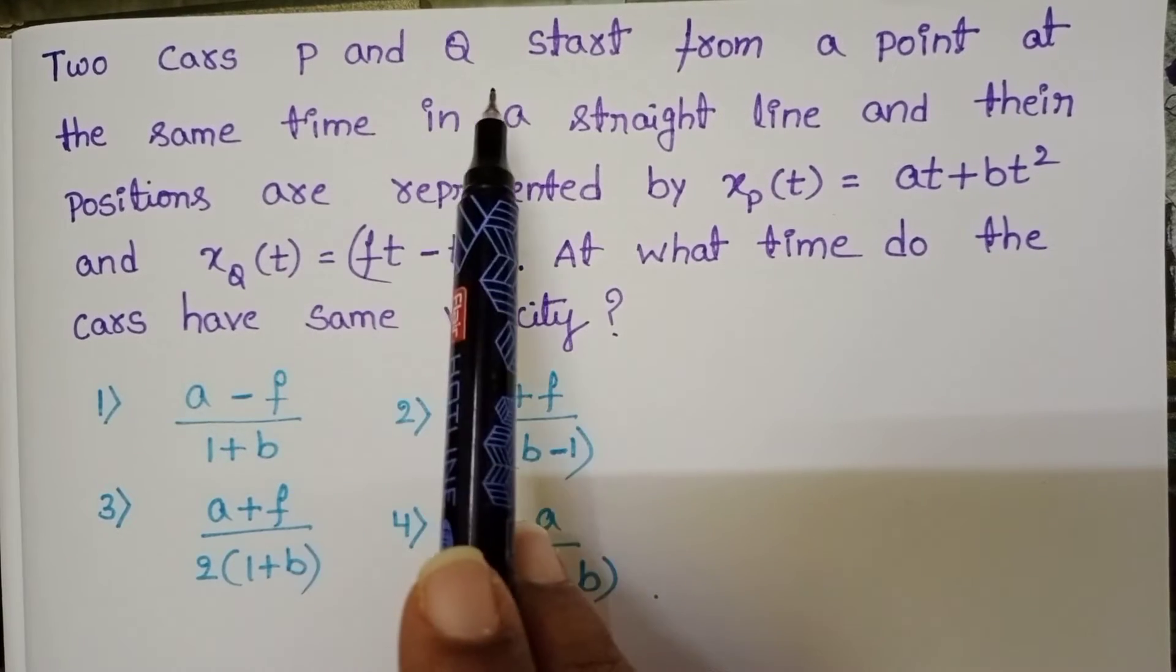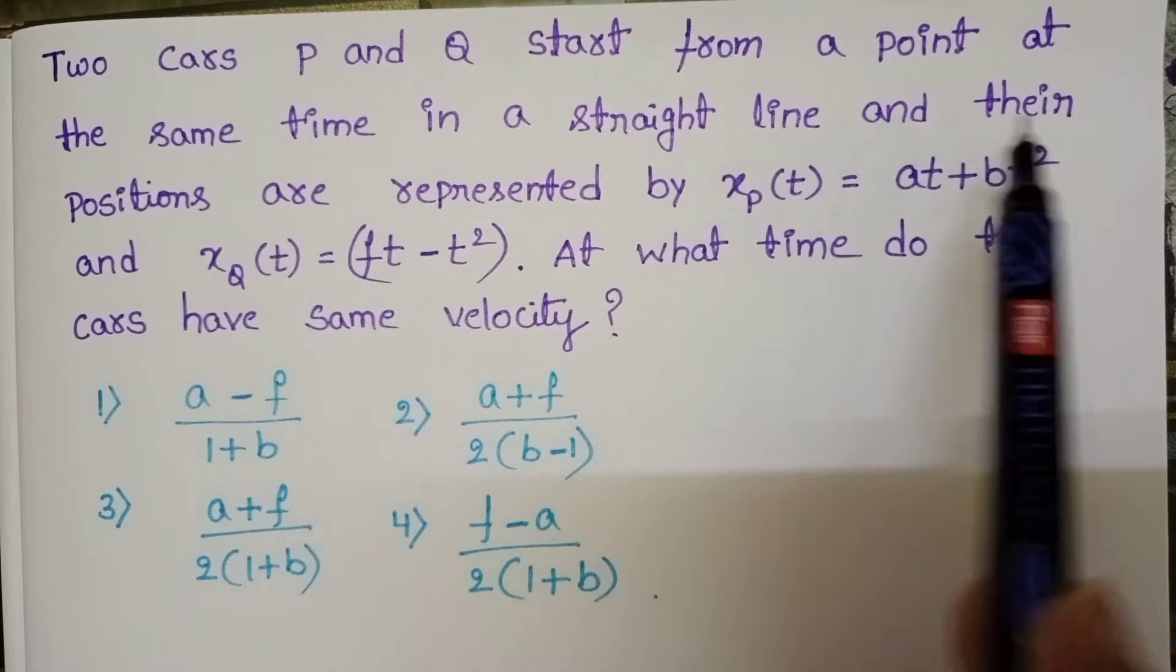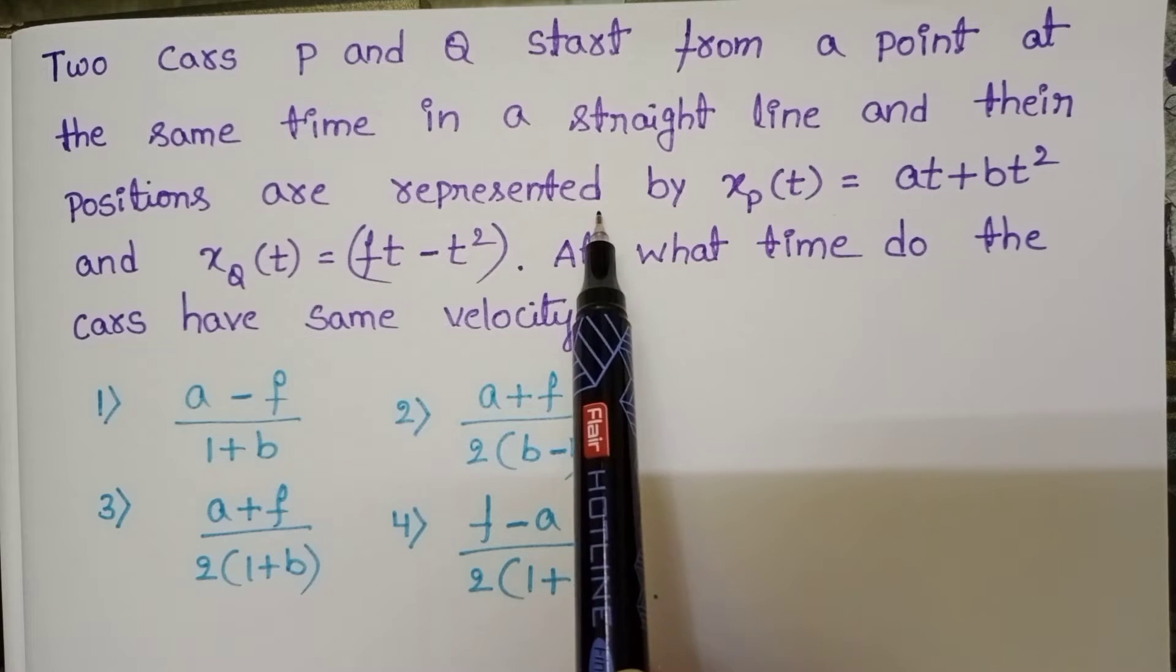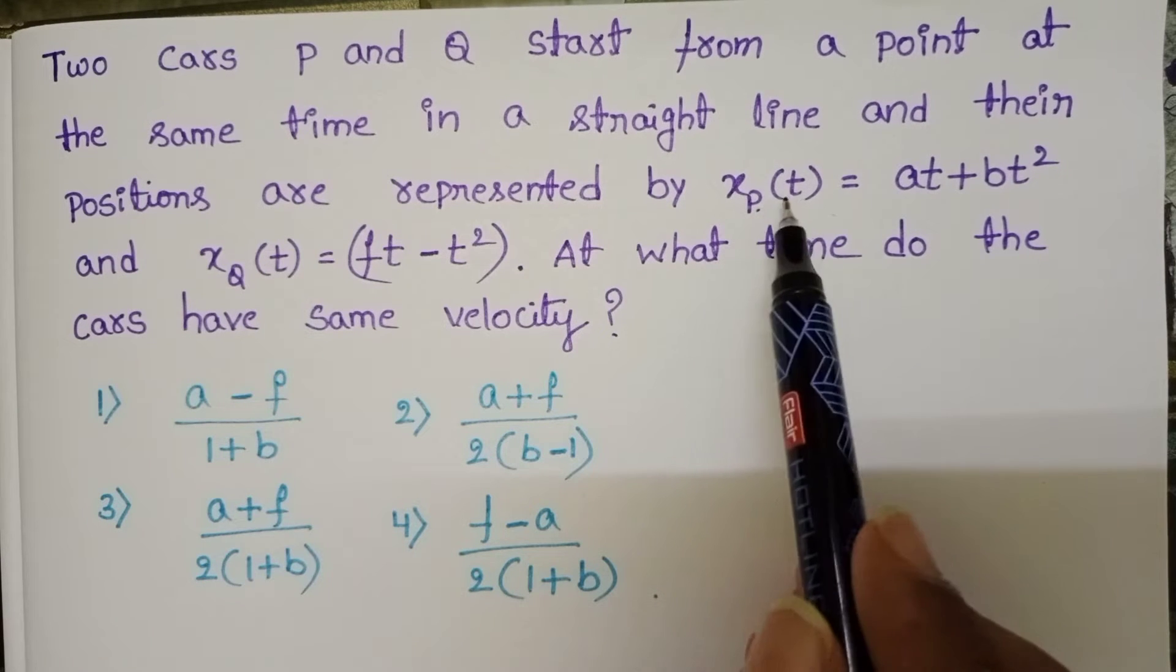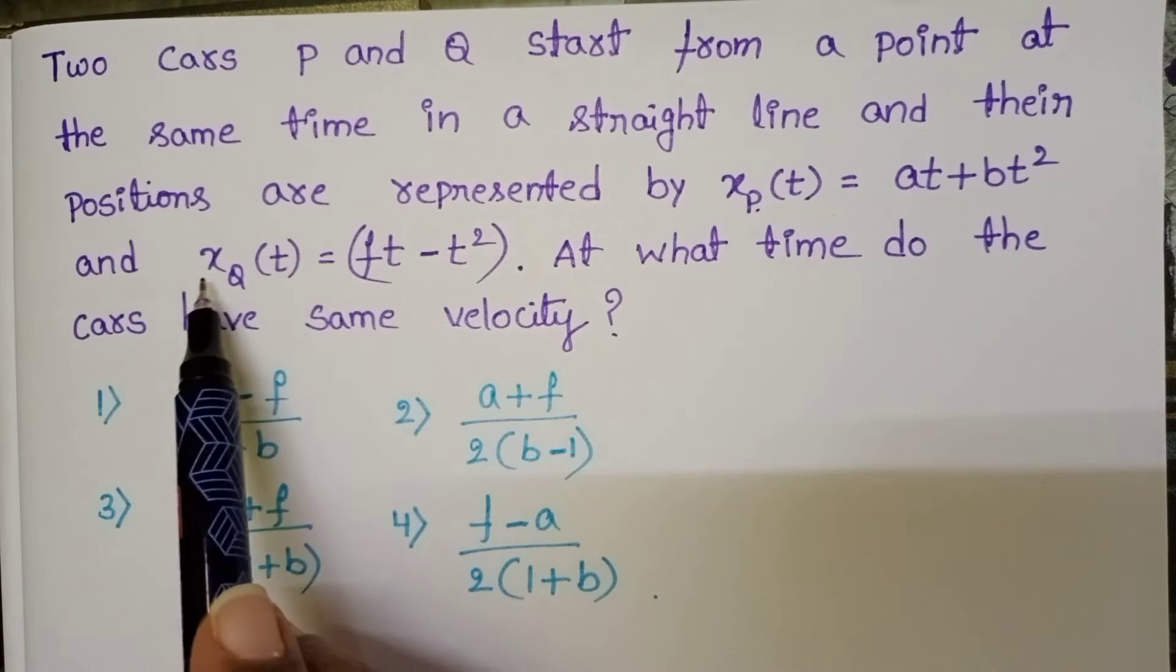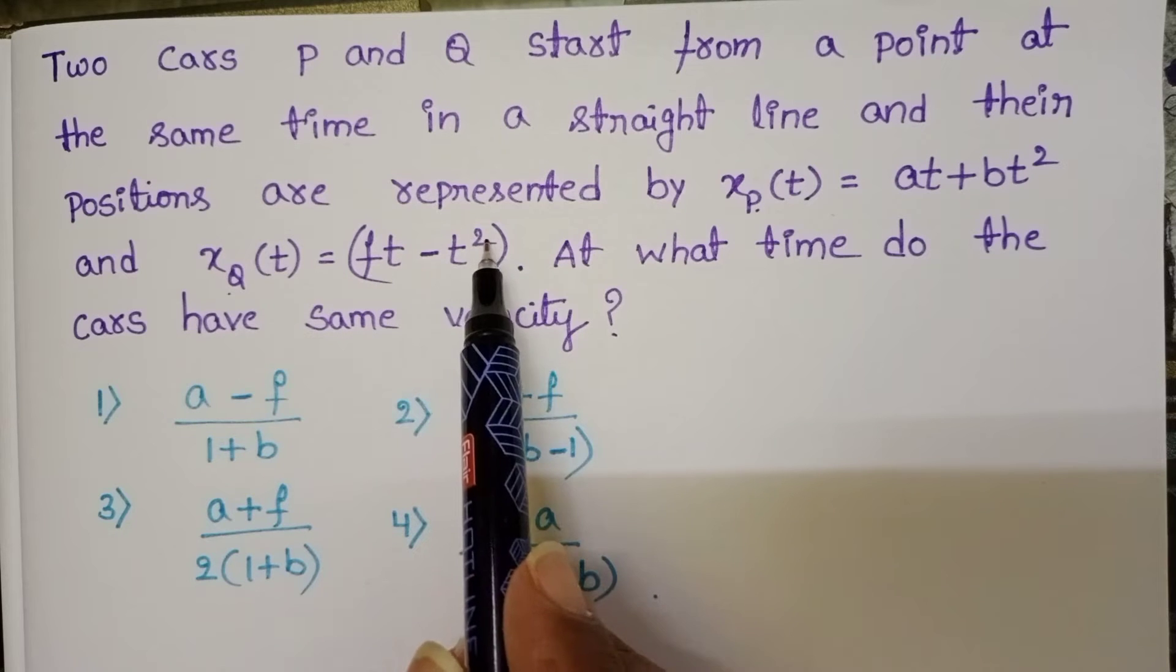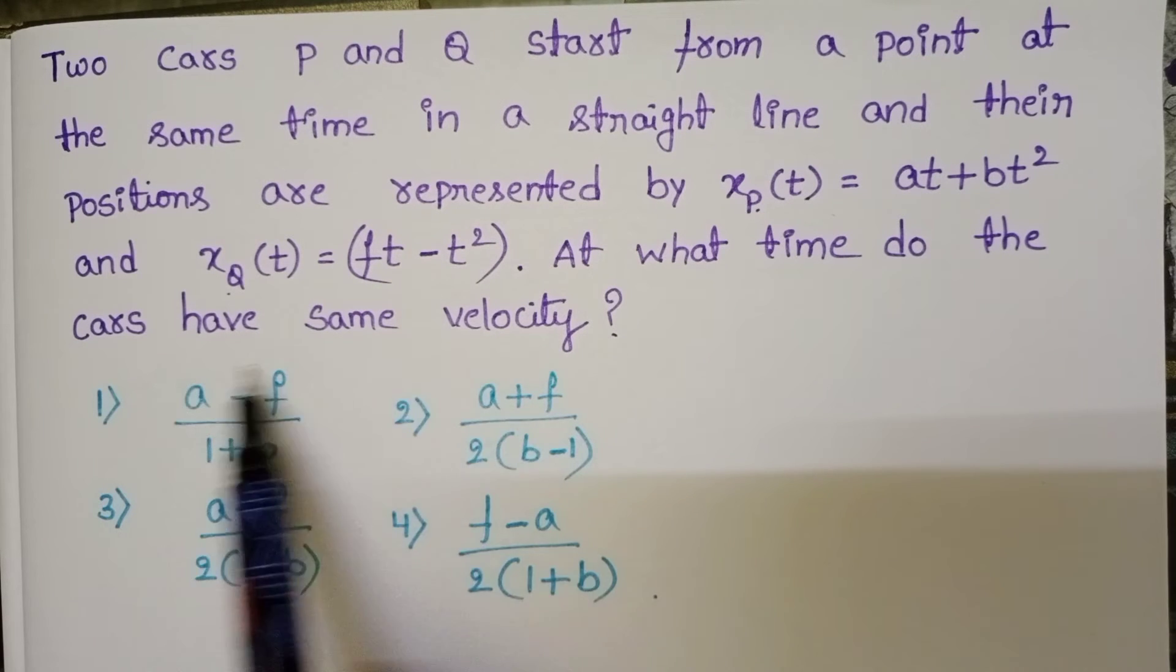Two cars P and Q start from a point at the same time in a straight line and their positions are represented by Xp(t) = at + bt² and Xq(t) = ft - t². At what time do the cars have the same velocity?